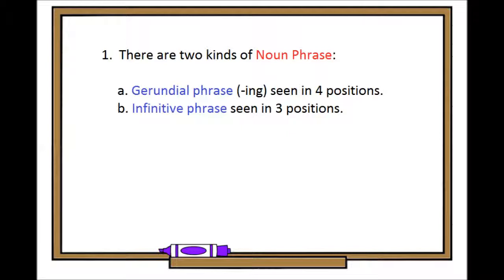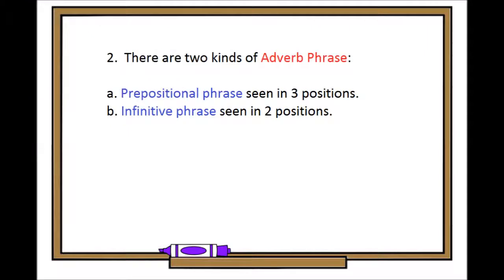There are two kinds of noun phrase: gerundial phrase (-ing) seen in four positions, and infinitive phrase seen in three positions. There are two kinds of adverb phrase: prepositional phrase seen in three positions, and infinitive phrase seen in two positions.